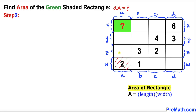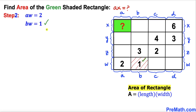Now let's set up our area equations. The rectangle with area 2 gives us a times w equals 2. The rectangle with area 1 gives us b times w equals 1. The rectangle with area 3 gives us b times z equals 3.